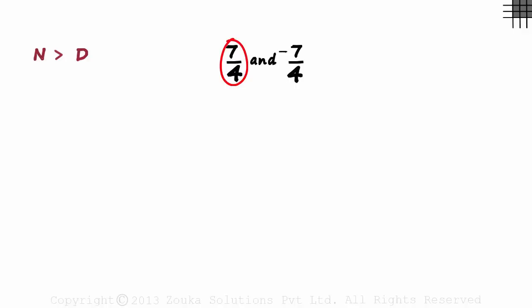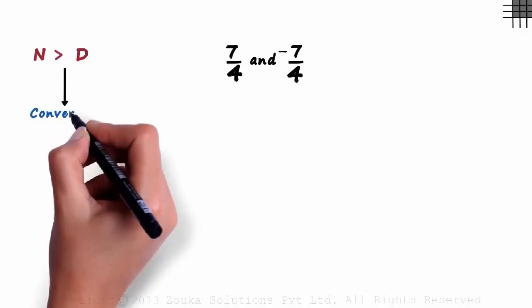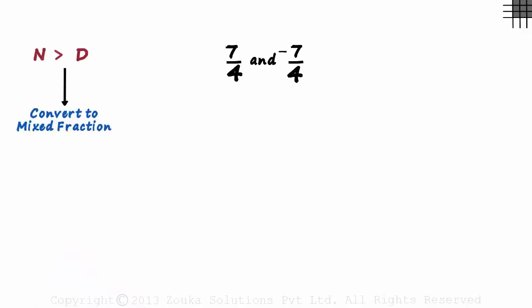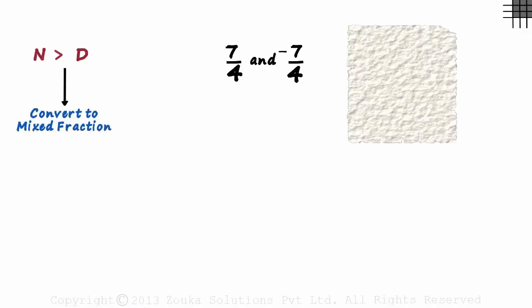The first step in such kind of problems where the numerator is greater than the denominator is to convert it into a mixed fraction form. You would have learned this in your earlier classes but let me quickly show you how. We only have to divide 7 by 4.